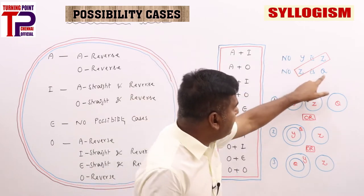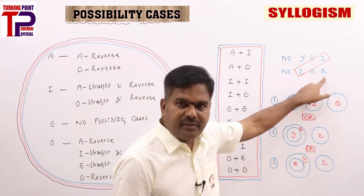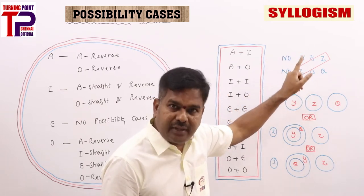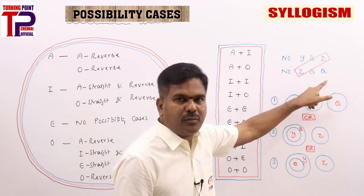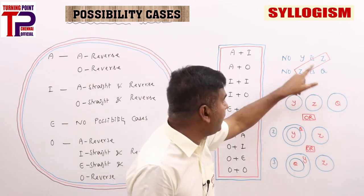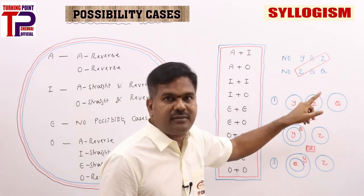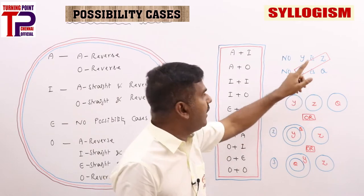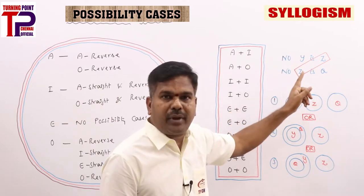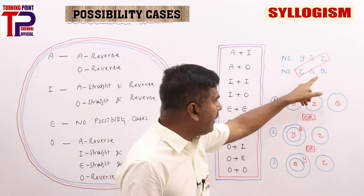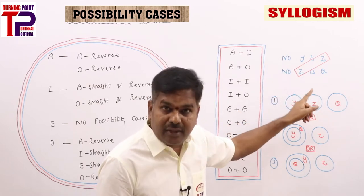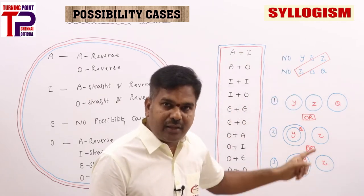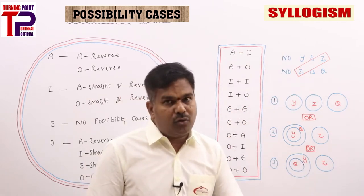All possibilities follow — all Y is Q being a possibility: yes. All Q is Y being a possibility: yes. Some Y is Q is a possibility: yes. Some Y is not Q being a possibility: yes. Some Q is not Y being a possibility: yes. No Y is Q being a possibility: yes. No Q is Y being a possibility: yes. Don't get confused.